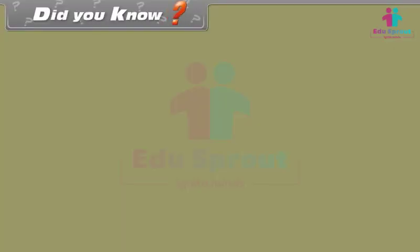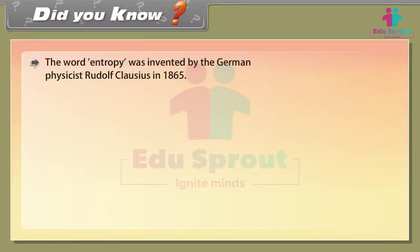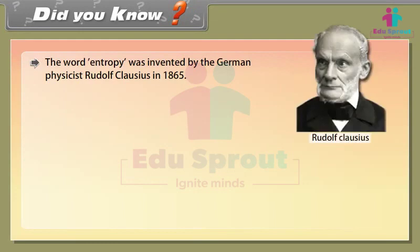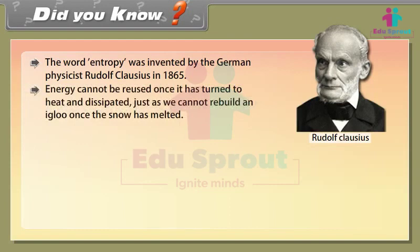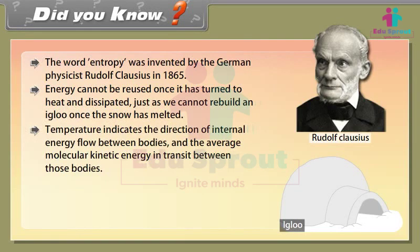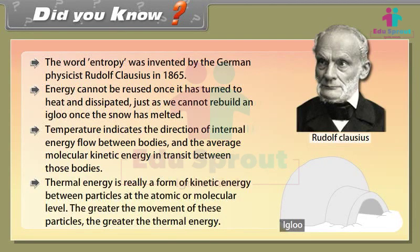Did you know? The word entropy was invented by German physicist Rudolf Clausius in 1865. Energy cannot be reused once it has turned to heat and dissipated, just as we cannot rebuild an igloo once the snow has melted. Temperature indicates the direction of internal energy flow between bodies and the average molecular kinetic energy in transit between those bodies. Thermal energy is really a form of kinetic energy between particles at the atomic or molecular level; the greater the movement of these particles, the greater the thermal energy.